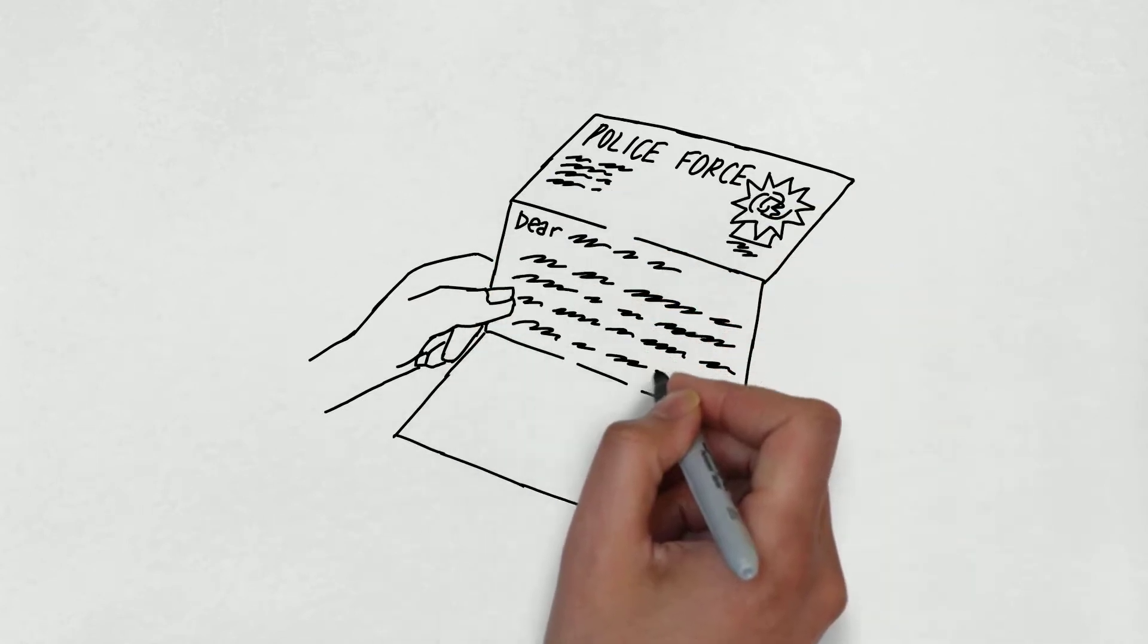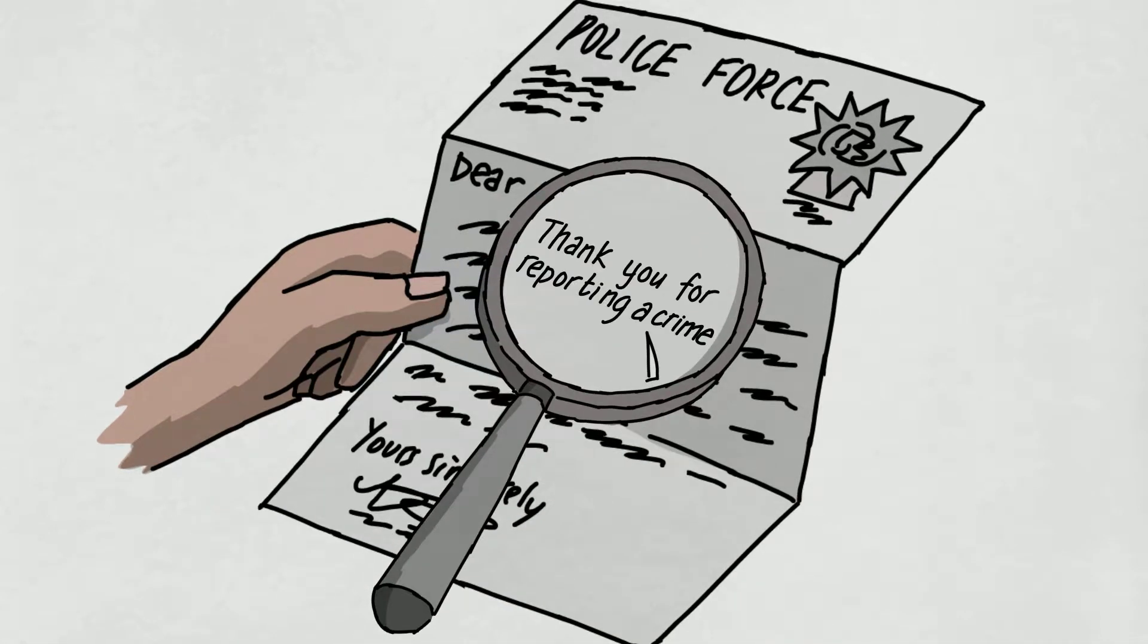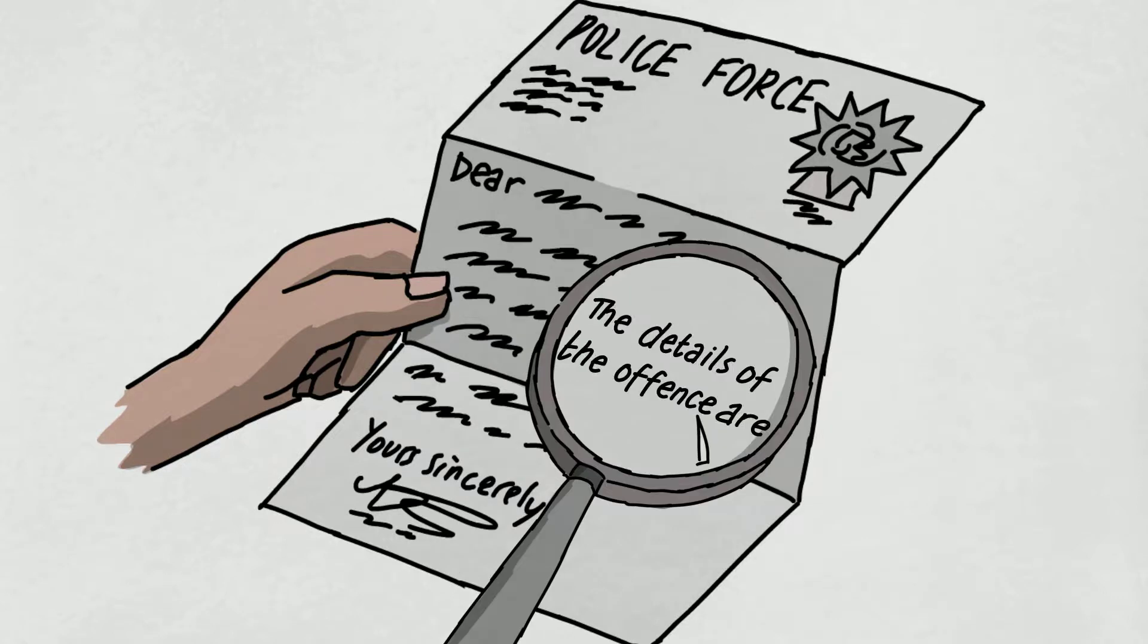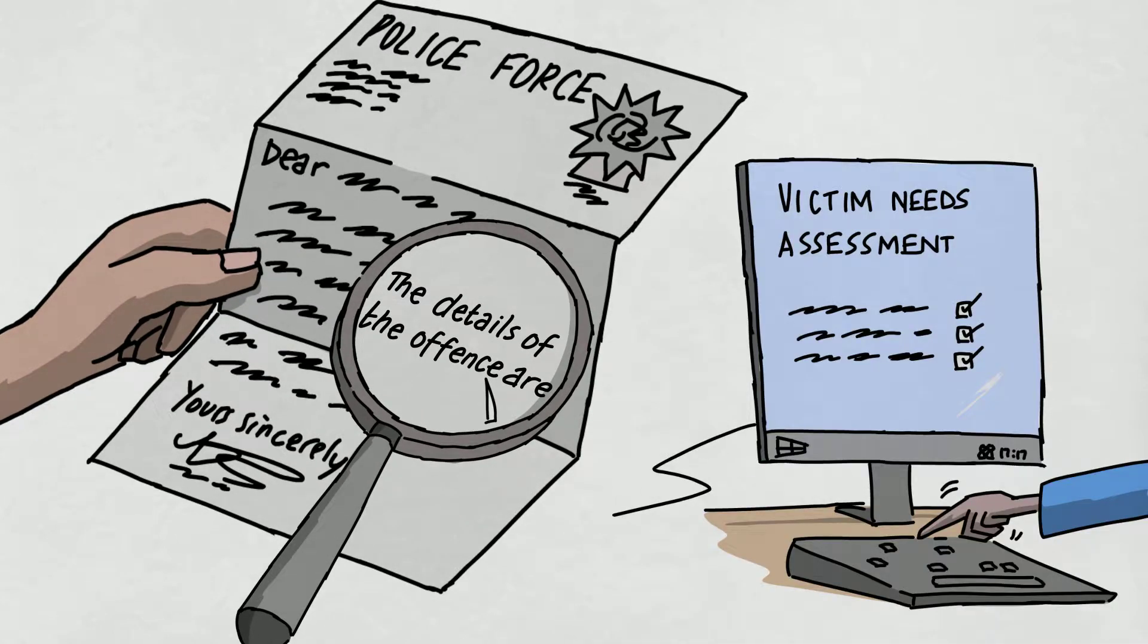All victims of crime are entitled to a written acknowledgement that they have reported a crime, including the basic details of the offence. This is provided automatically through Connect as a Victim of Crime letter, unless the officer selects No to the victim happy to receive letters question. A needs assessment to determine if additional support is needed.